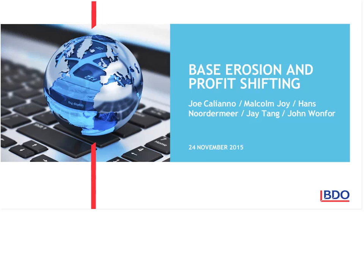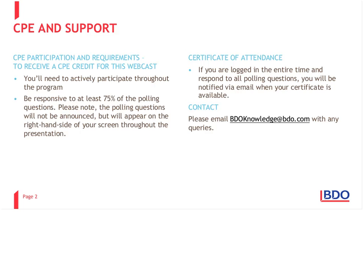Before we get started and move to slide two, let me address some administrative matters. First, this webinar qualifies for continuing professional education. To get a credit, you need to listen to the entire program and respond to the polling questions. These questions will not be announced but will appear from time to time on the right hand side of your screen throughout the presentation and there will be five polling questions. If you are logged in for the entire webinar and respond to all the polling questions, you will be notified via email when your PD certificate is ready.